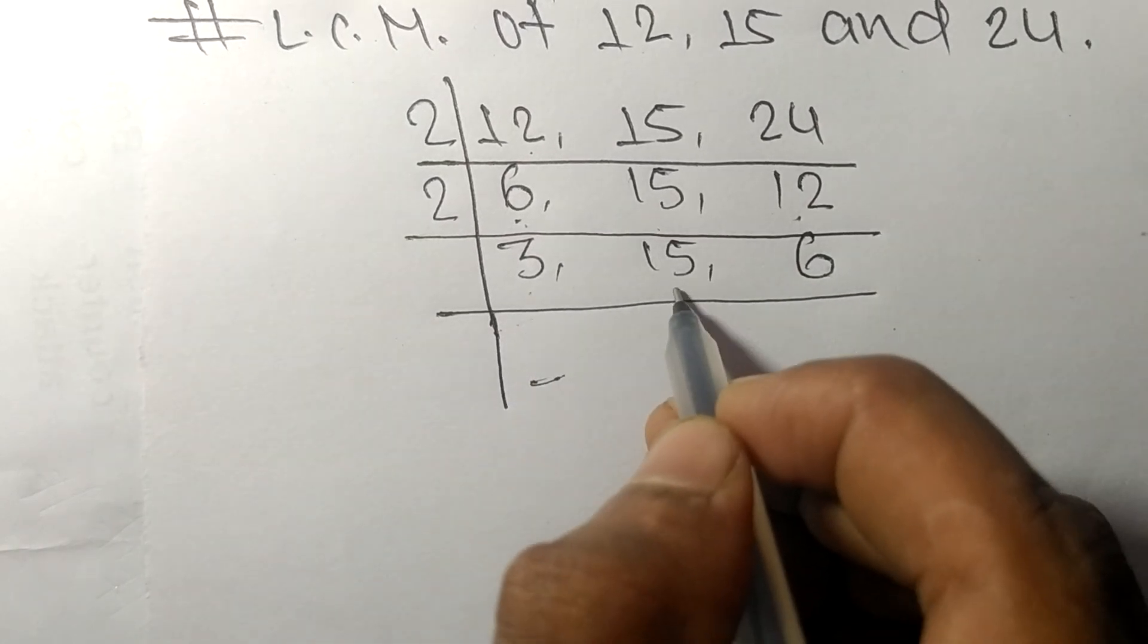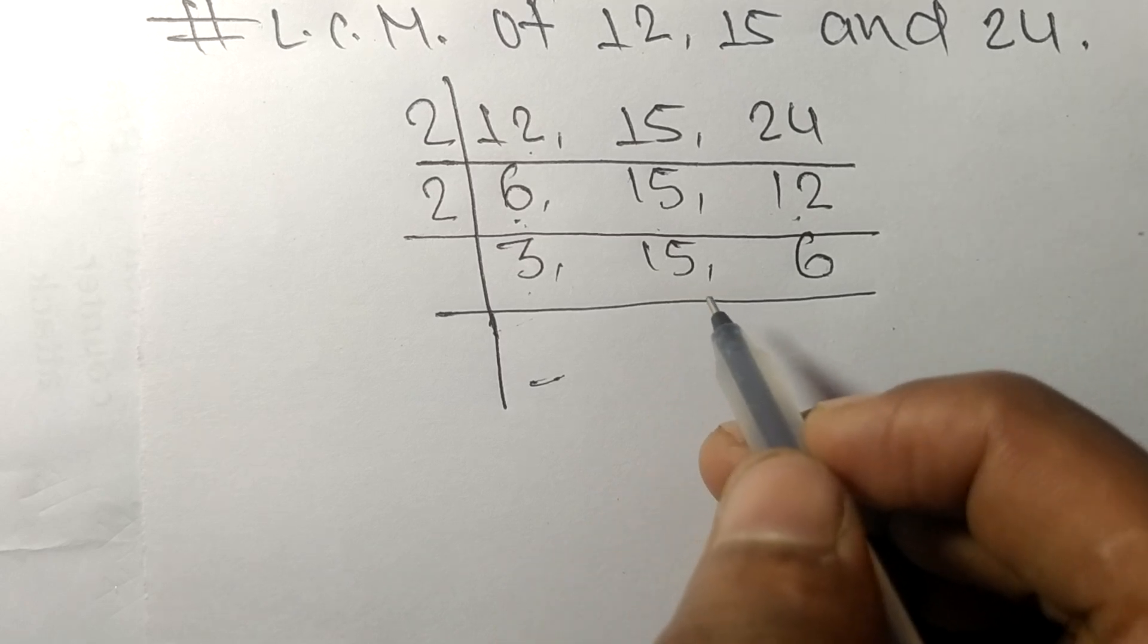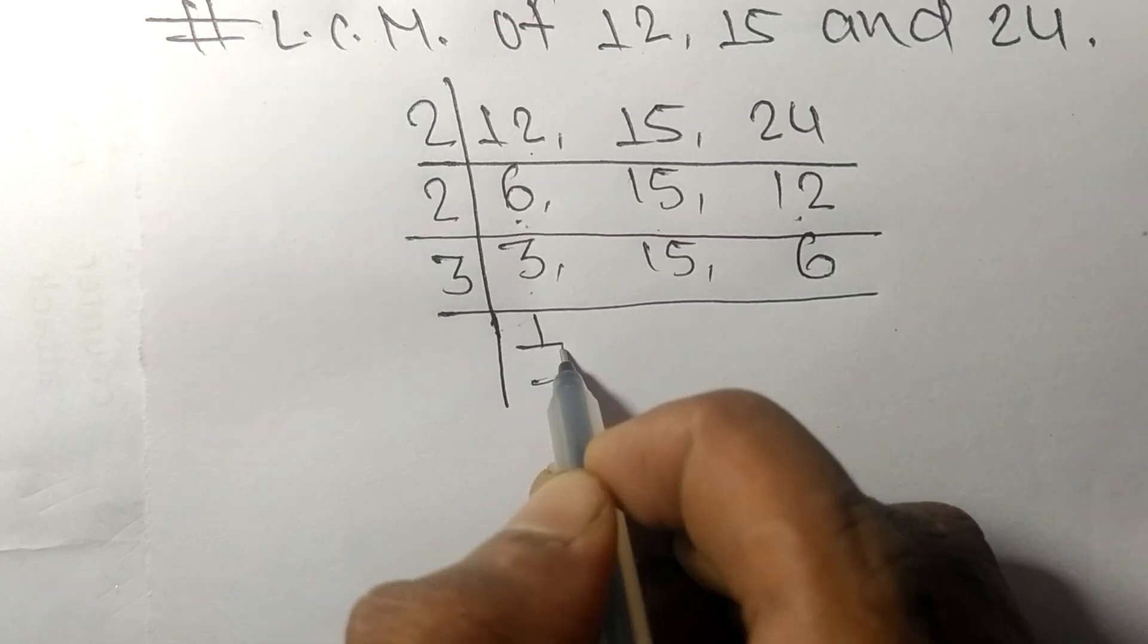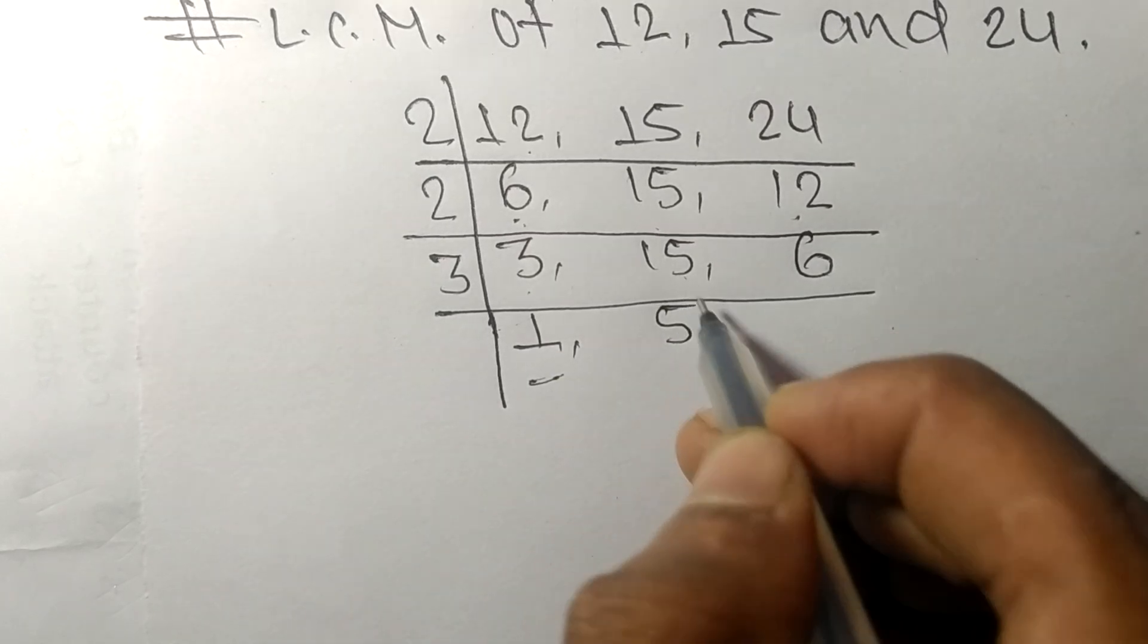So now we got 3, 15, and 6, which are exactly divisible by 3. 3 times 1 equals 3, 3 times 5 equals 15, and 3 times 2 equals 6.